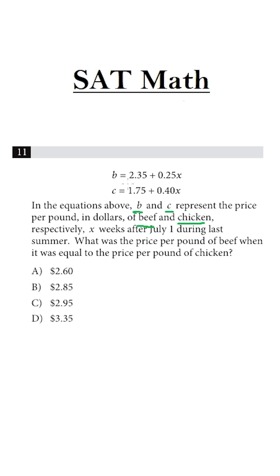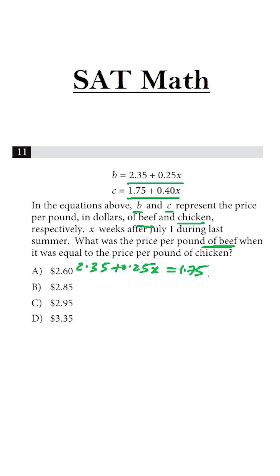The question asks: when the price of beef and the price of chicken were equal, what was the price per pound of beef? First, we have to calculate X — just set them equal. Both prices are equal, meaning 2.35 plus 0.25X is equal to 1.75 plus 0.40X.